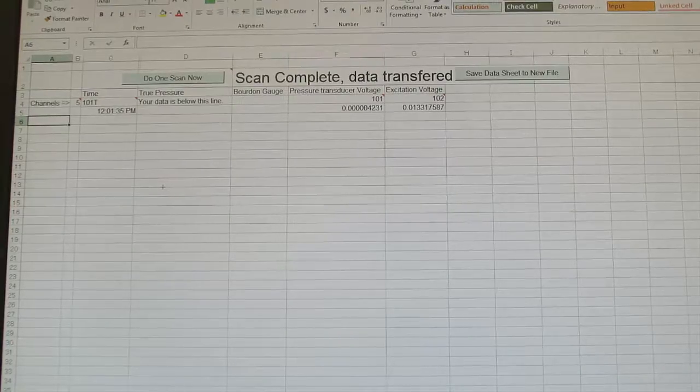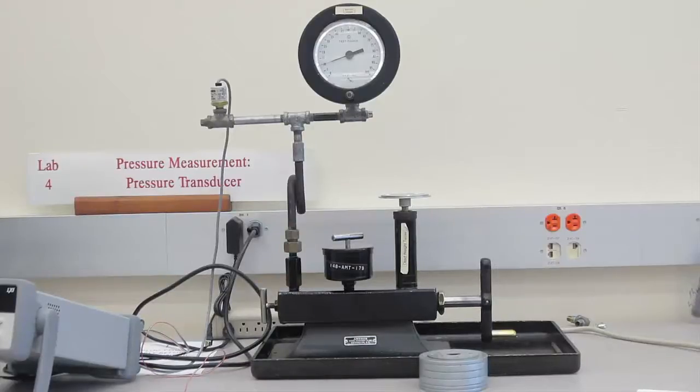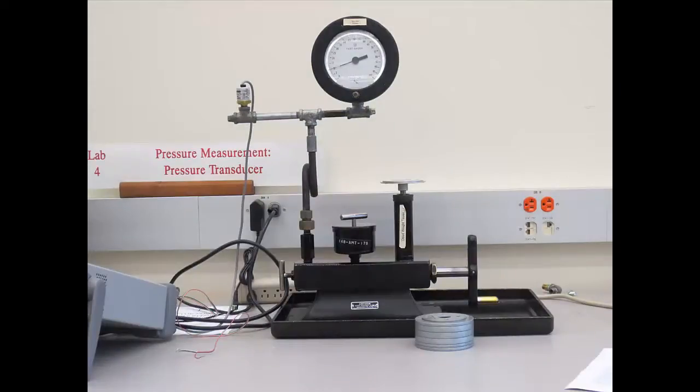Now we are ready to calibrate the pressure transducer and the Bordon tube gauge. To proceed with the experiment, you will add the weights in 10-pound intervals so you can calibrate the pressure transducer and the Bordon tube gauge. You will go up to 100 pounds and back down to 10 pounds.